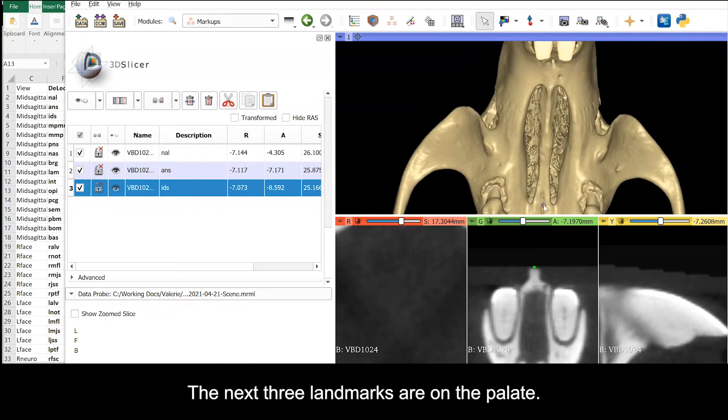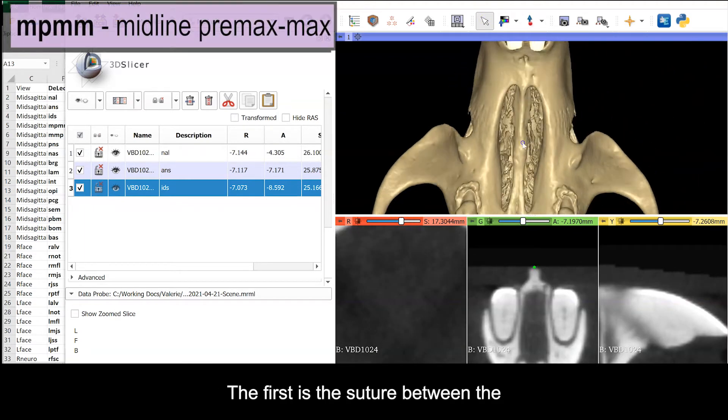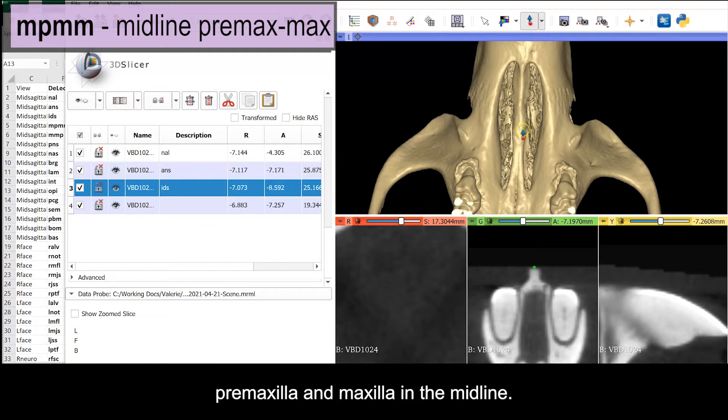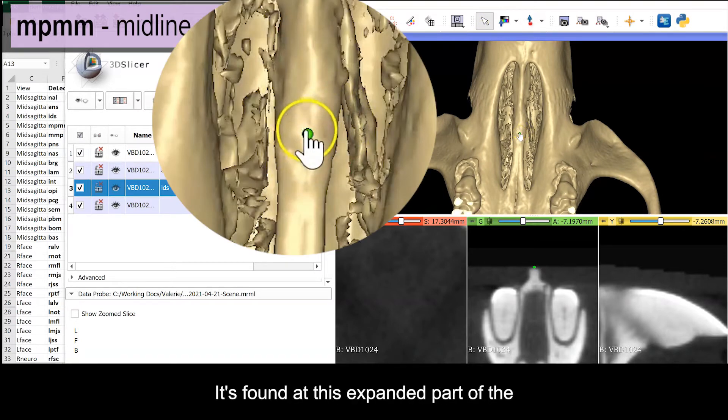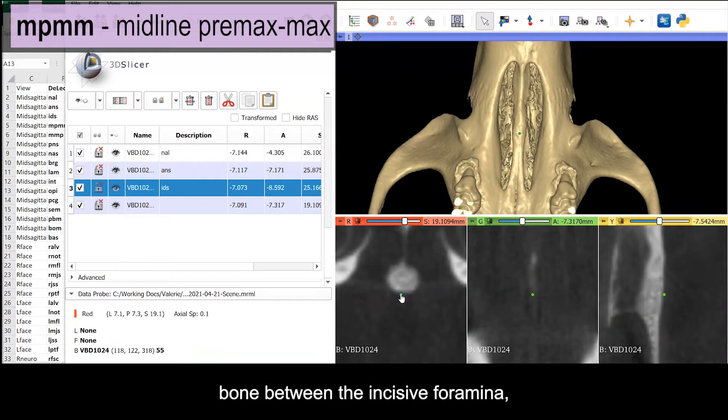The next three landmarks are on the palate. The first is the suture between the premaxilla and the maxilla. In the midline, it's found at this expanded part of the bone between the incisive foramina, which are huge in the mouse.